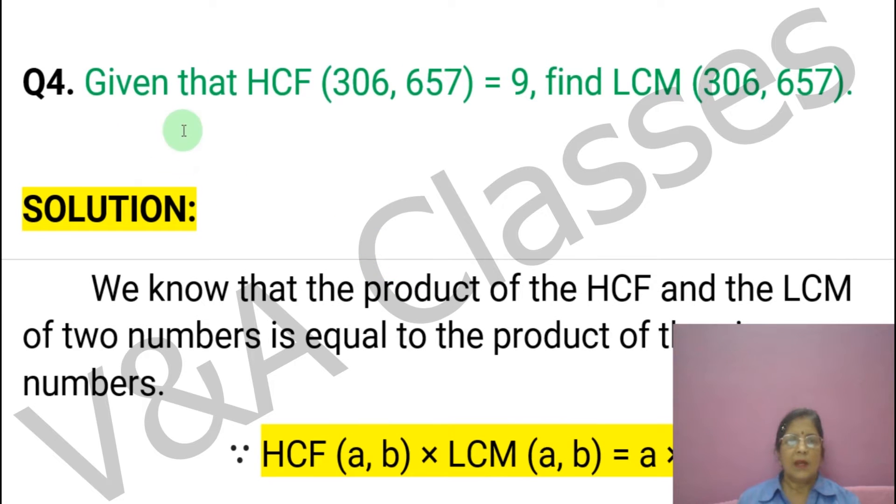Now question number 4. Given that HCF of 306 and 657 equals to 9, find LCM of 306 and 657. This question means that two numbers are given. The first number is 306 and the second number is 657. The HCF of these two numbers is 9. Now we have to find the LCM of these two numbers.